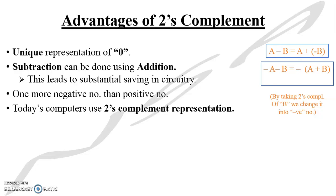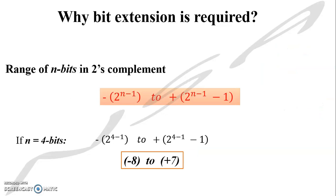Why do we learn bit extension? Bit extension is at times necessary when you restrict the number of bits. For example, if there are 4 bits, my range comes from minus 8 to plus 7. I am working on 4 bits with the 2's complement method applied. My range says that I can represent numbers from minus 8 to plus 7. Suppose I perform addition or subtraction using the 2's complement method and the answer is plus 8 or plus 16.